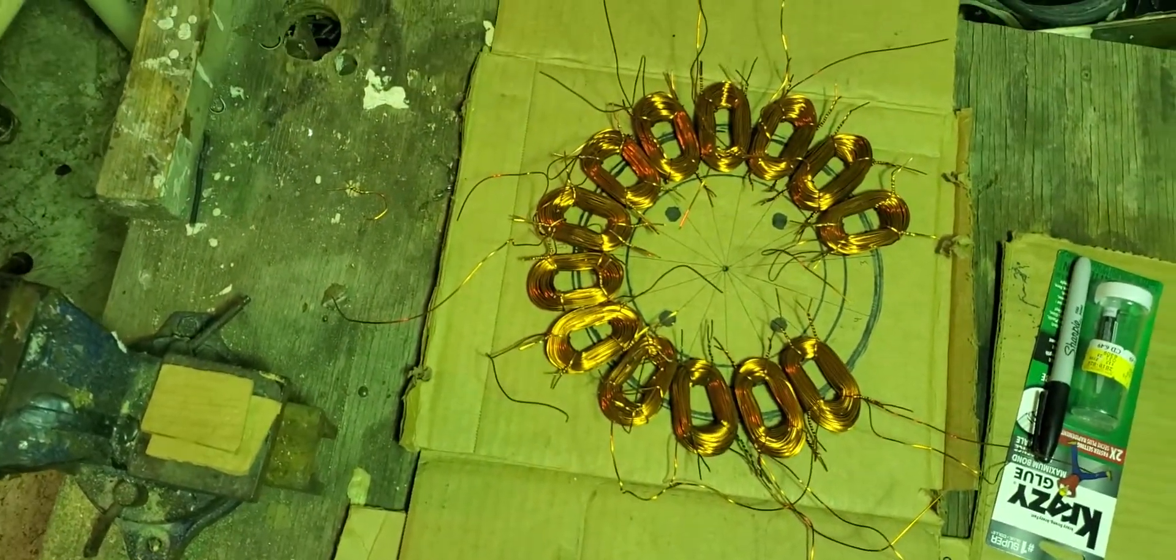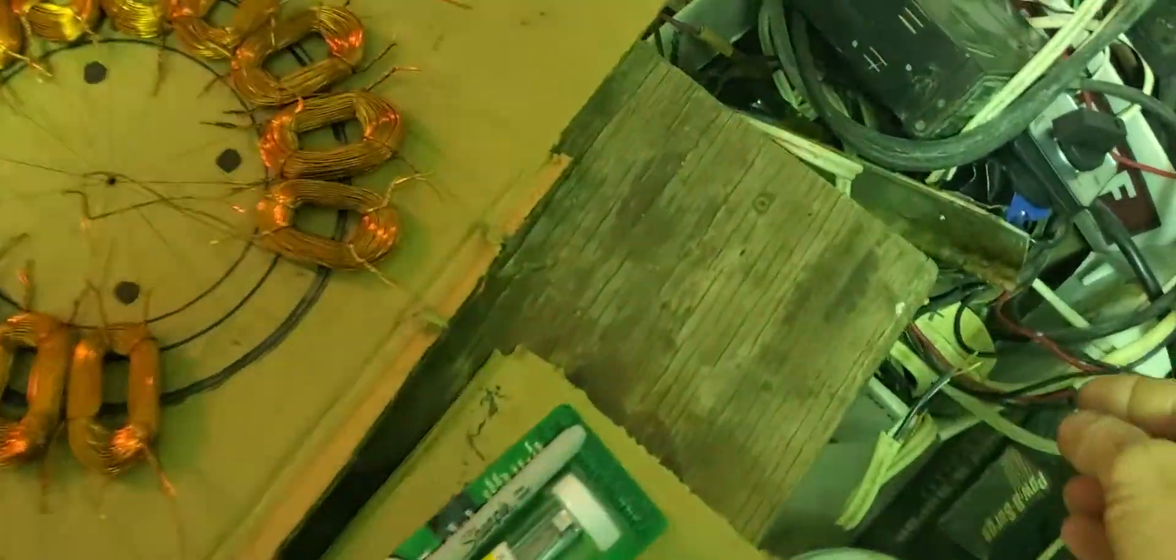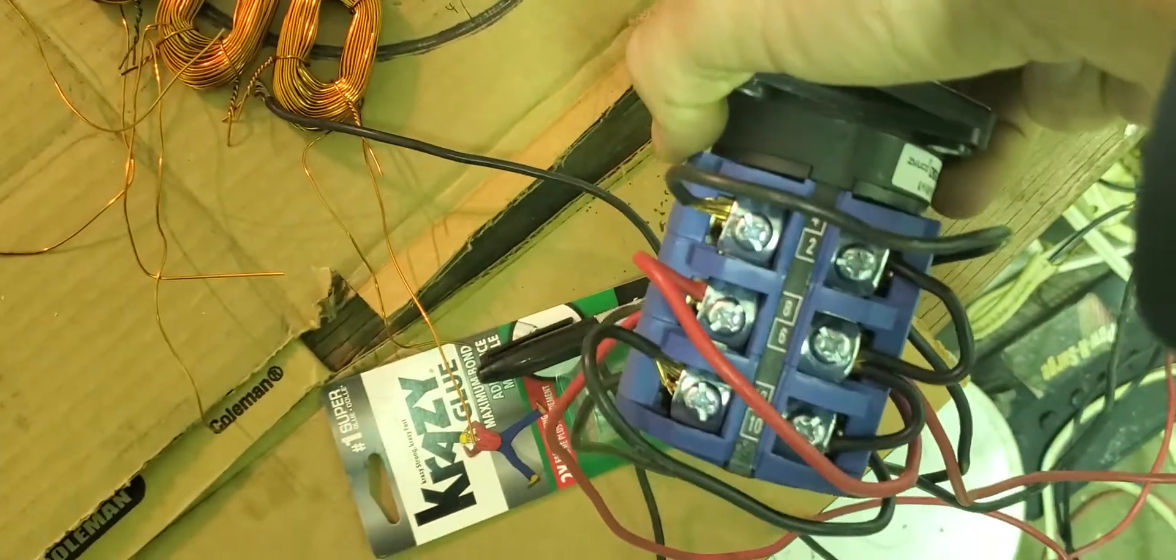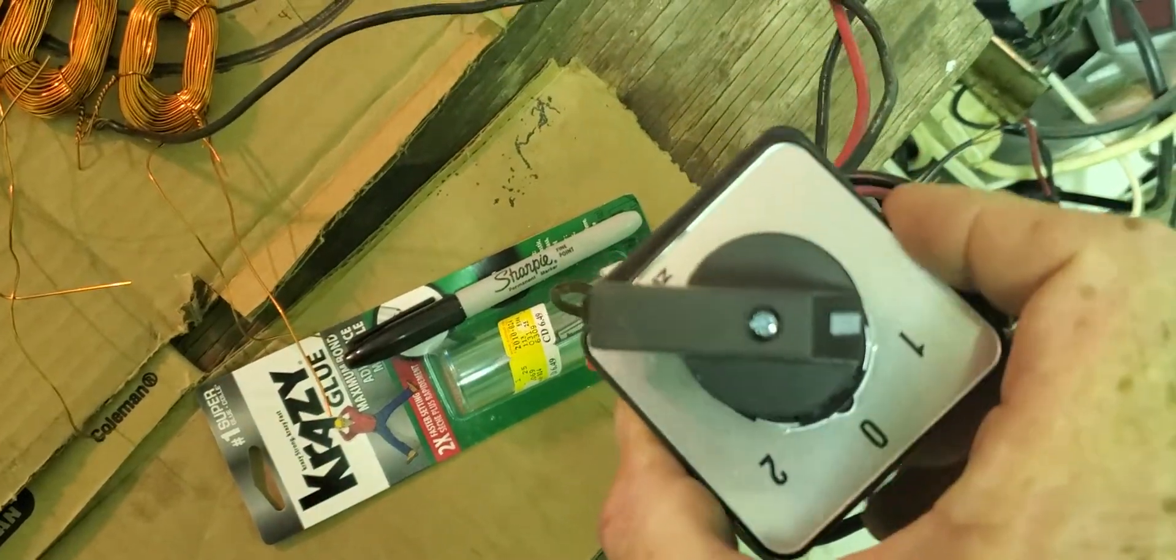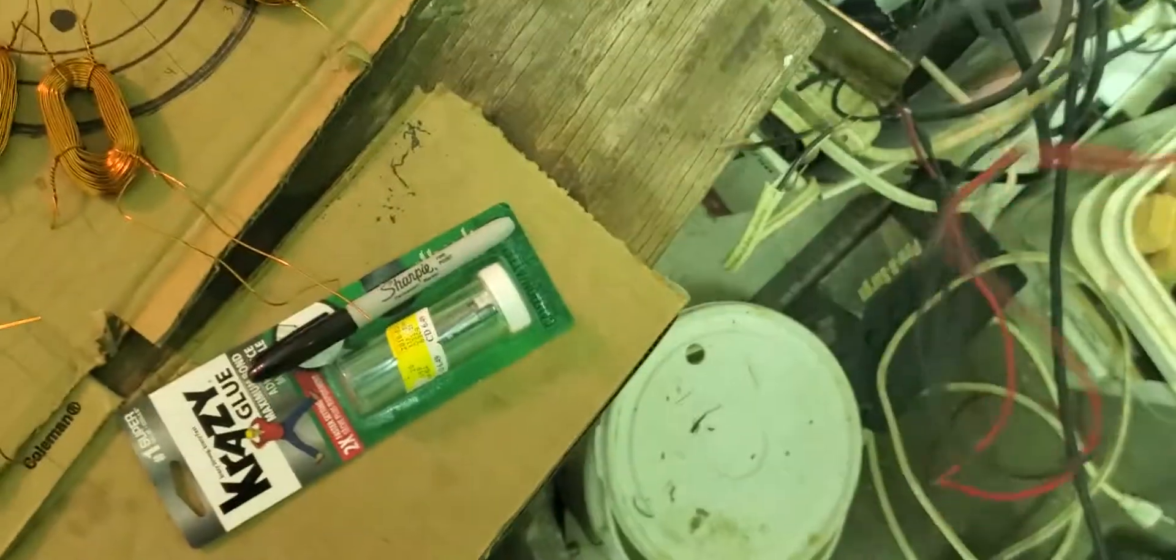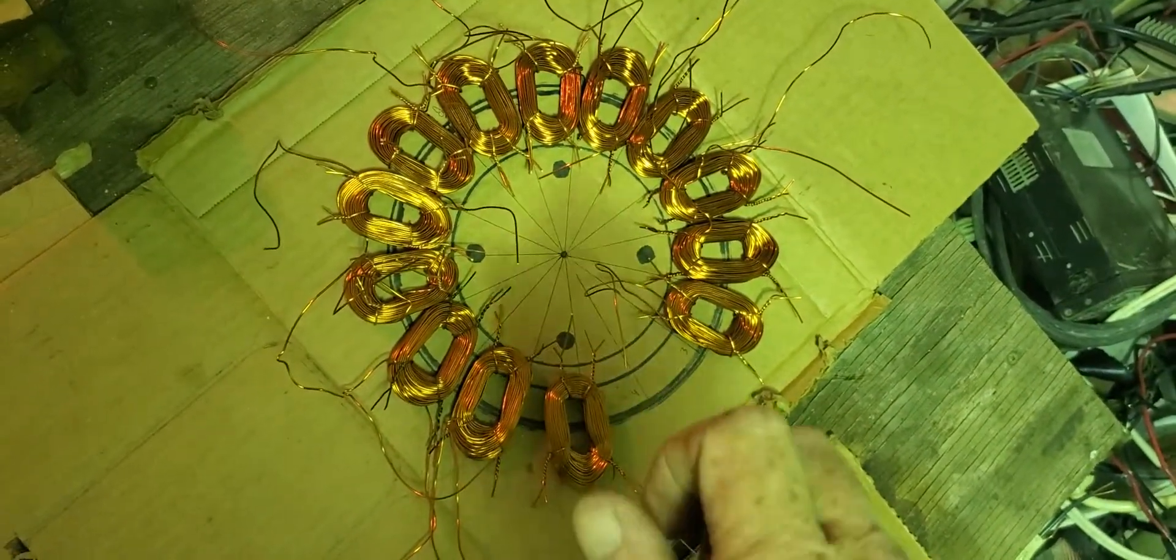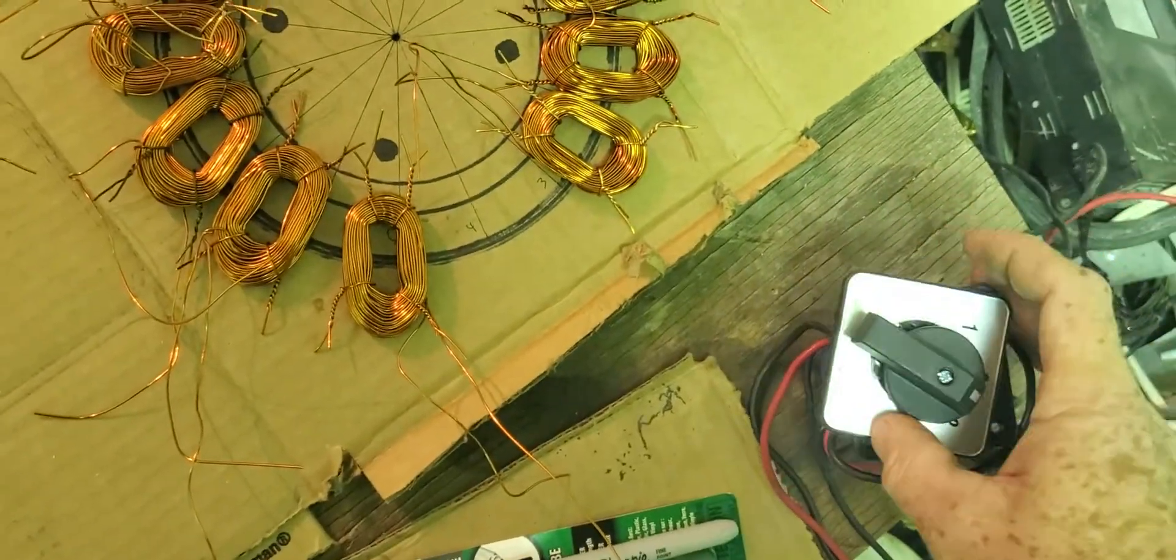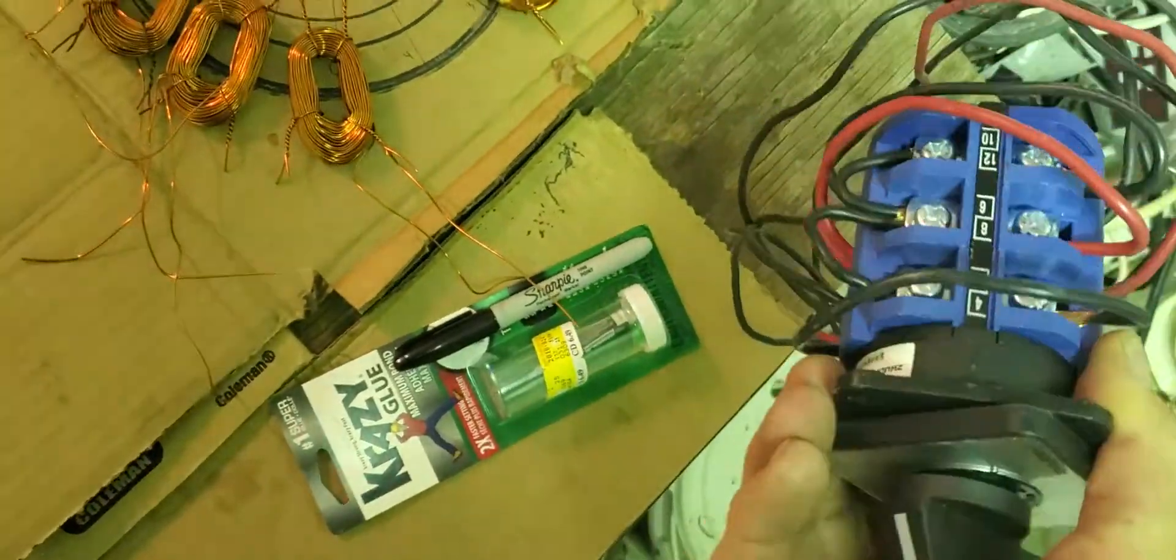And if you haven't seen one of my other videos, I show how to use one of these switches. This is a three-phase motor reversing switch. You can hook a three-phase alternator in series or parallel just by switching from one to two on here with the wiring I show in that video.